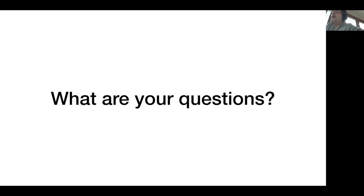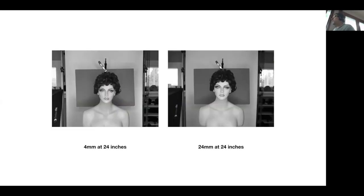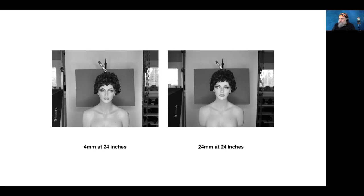A question about the earlier comparison of a 4mm iPhone lens and a 24mm full frame lens: both photos were taken from the same tripod position — the iPhone was placed on the tripod, then swapped for the full frame camera. The only adjustment was changing the aspect ratio of the 35mm camera from 2x3 to 4x3 to match the iPhone's cropping. The exposure differed slightly because there's limited control over iPhone exposure.